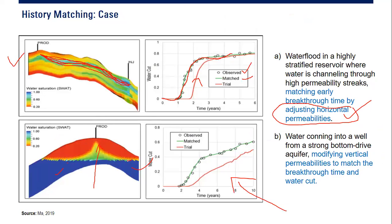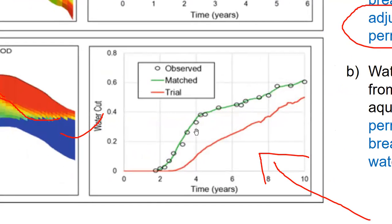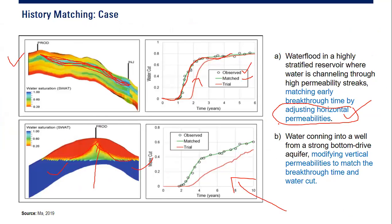A simulator can adjust permeability, porosity, and many other parameters to get the best match. The best match in this case is the green scenario; the red line is not matched. You need engineering sense — good analytical understanding, analytical thinking, and a good understanding of reservoir fluid flow — to guess the best parameter to adjust.